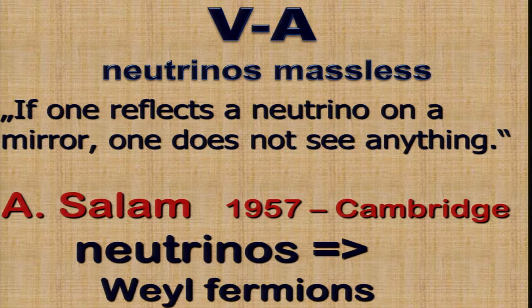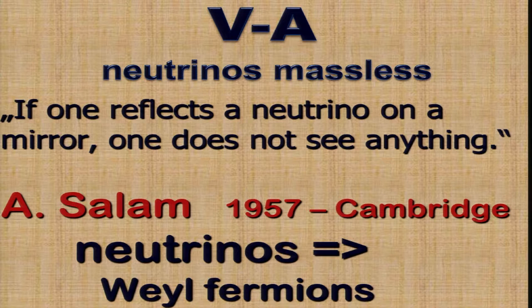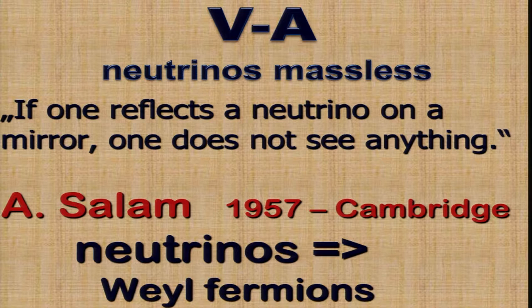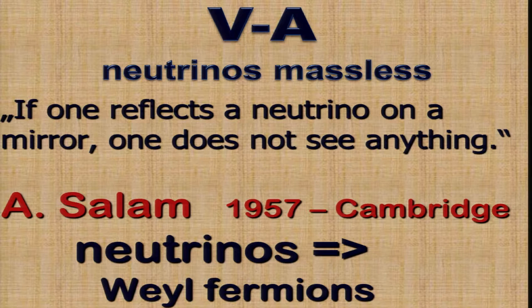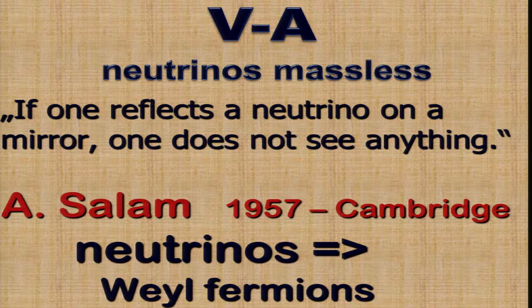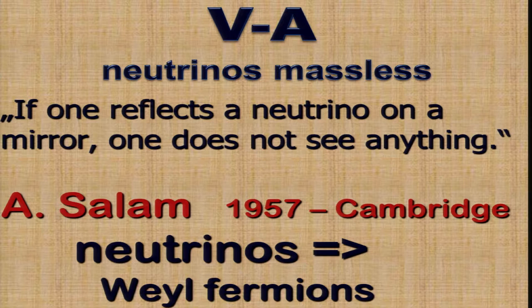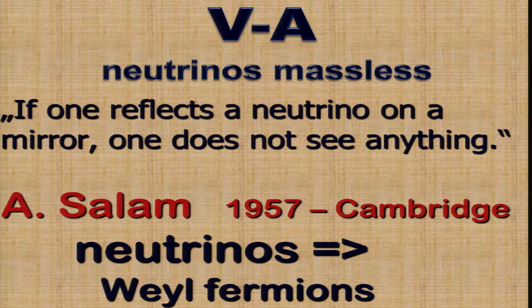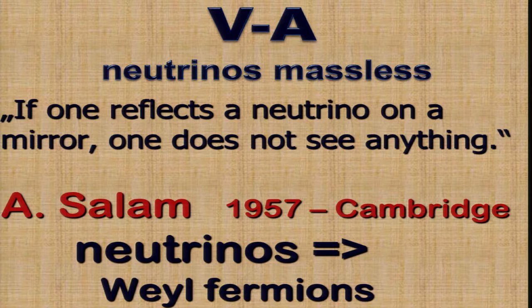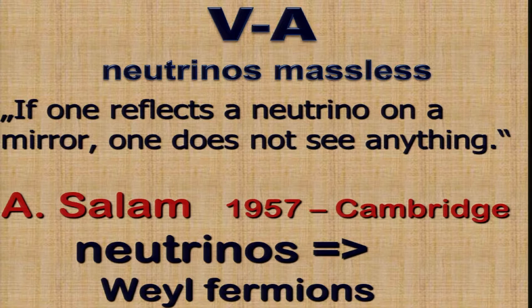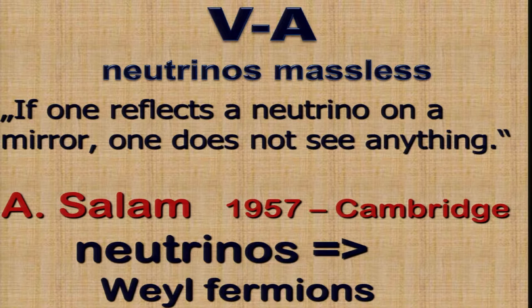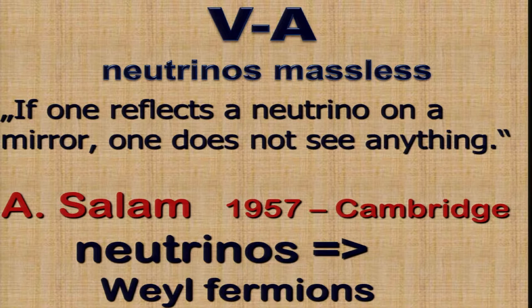Then the idea came out, in particular by Marshak and Feynman and Gell-Mann on the V minus A theory, that in weak interactions the couplings are vector minus axial vector current. That suggests that neutrinos are massless. Salam considered this already in 1957 when he was in Cambridge - he considered the neutrinos to be Weyl fermions. They are Dirac fermions, but Weyl fermions are simpler, only two components, and they must be massless. He said if one reflects a neutrino in a mirror, it's not changing its nature from a left-handed neutrino to a right-handed neutrino. It just annihilates. Nothing comes out.